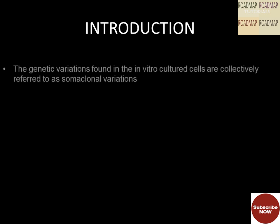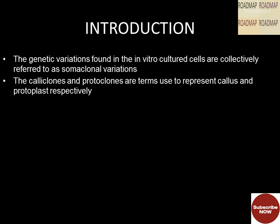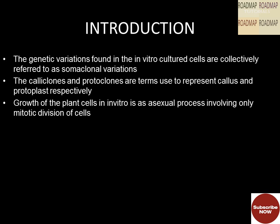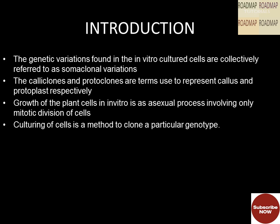A thought which must be coming to your mind after hearing somaclonal variations is: what exactly are somaclonal variations? The genetic variations which are found in in vitro cultured cells are collectively referred to as somaclonal variations. The terms calliclones and protoclones are used to represent callus and protoplast respectively. Growth of plant cells in vitro is an asexual process involving only mitotic divisions of cells. Culturing of cells is a method to clone a particular genotype.